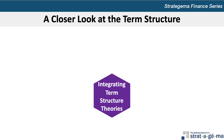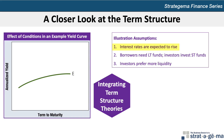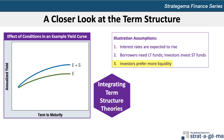To understand how all three theories simultaneously affect the yield curve, consider three conditions: first, investors and borrowers expect interest rates to rise; second, most borrowers need long-term funds while most investors have only short-term funds; and third, investors prefer more liquidity to less. The expectations theory condition suggests an upward-sloping yield curve shown as curve E. Adding the segmented markets condition gives curve E plus S. Including the liquidity premium for longer-term securities produces curve E plus S plus L, reflecting the combined effect of all three theories.